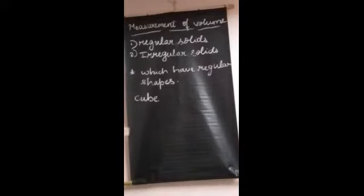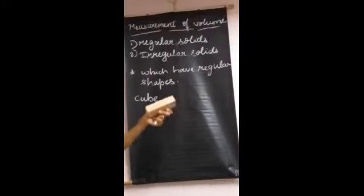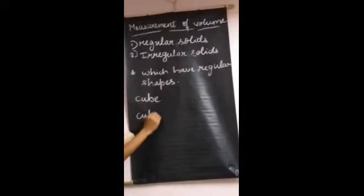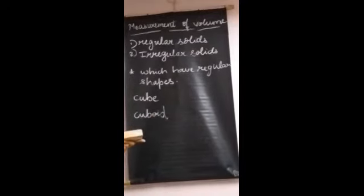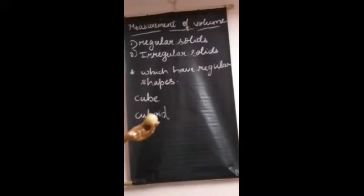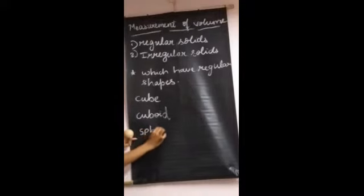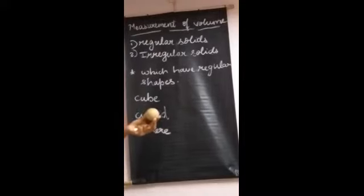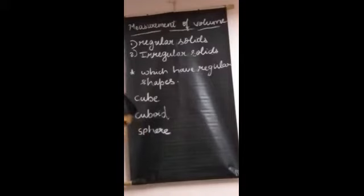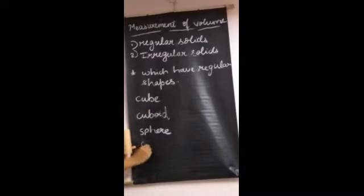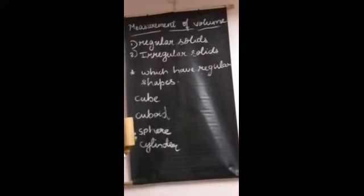Next, this is a cuboid. We can find the volume of this cuboid, so cuboid is also a regular solid. Next, what is this sphere? We can calculate the volume of the sphere, so this is also a regular solid. And here I have a cylinder — cylinder is also called a regular solid.